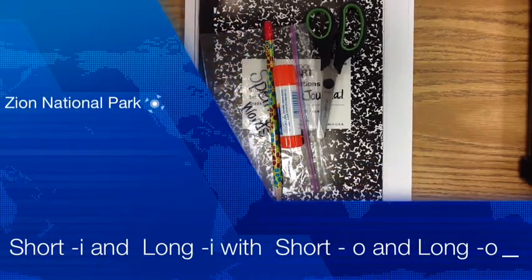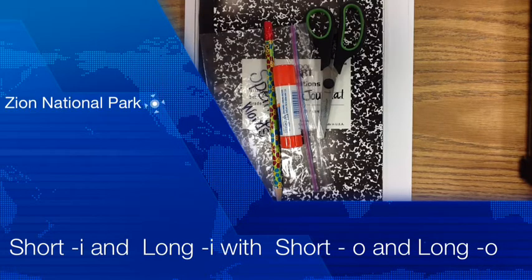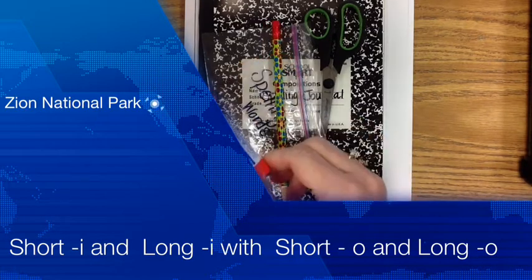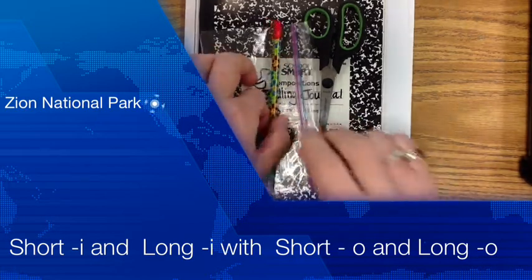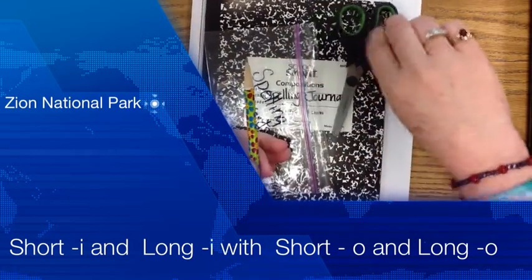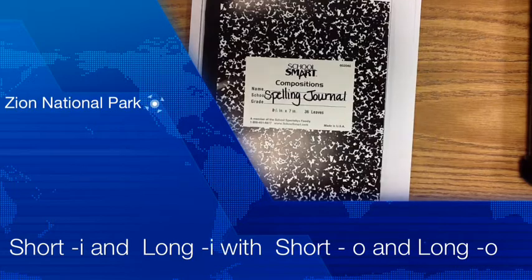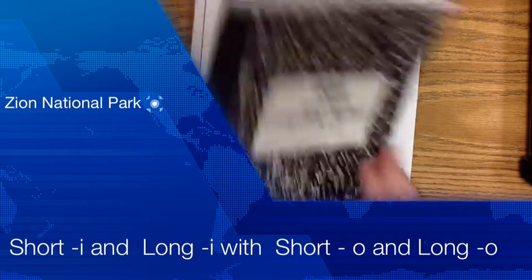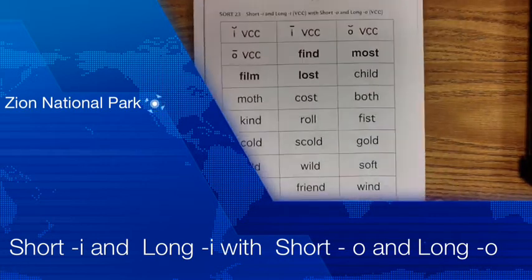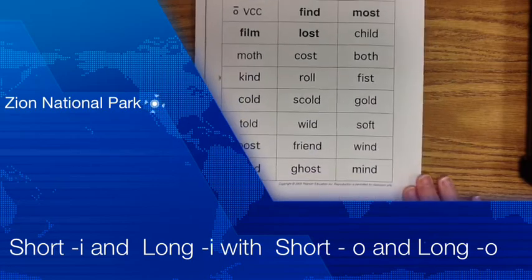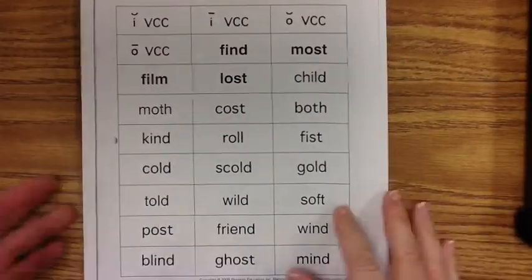Welcome students to this week's spelling netcast. This is Sort 23: short I and long I with short O and long O. Let's make sure that you're prepared with your handy dandy glue stick, a sharpened pencil, your scissors, your spelling bag, your spelling journal, and of course your spelling words. Let's get started.